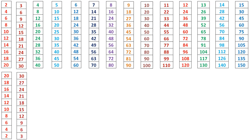3 times 10 is 30, 3 times 9 is 27, 3 times 8 is 24, 3 times 7 is 21, 3 times 6 is 18, 3 times 5 is 15, 3 times 4 is 12, 3 times 3 is 9, 3 times 2 is 6, 3 times 1 is 3.